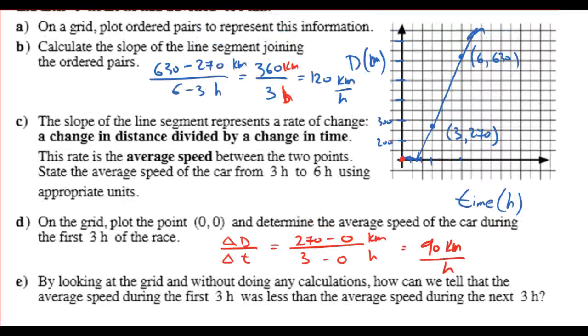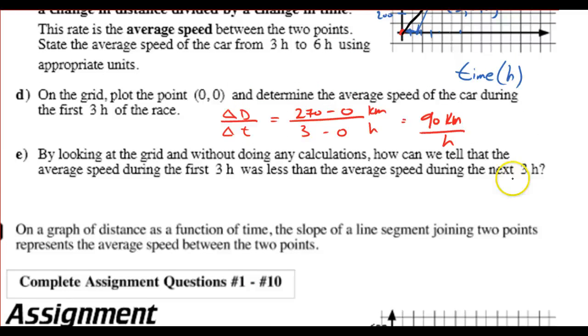By looking at the graph without doing any calculations, how can we tell the average speed during the first 3 hours was less than the average speed during the next 3 hours? Well, the simple way to do that is, I should have obviously connected this point here to the origin. So, our graph really looks like this. The slope here is less steep, which means it's going slower. You're not covering as much distance over the same period of time. So, that's basically number E there. The steepness of the slope represents how fast somebody's going. And, here's kind of an important note that you're going to need for physics 11. Okay, guys, thanks for watching, and see you next time.